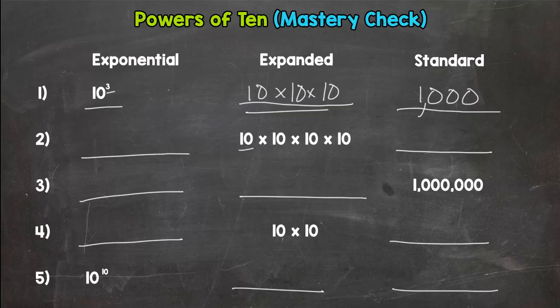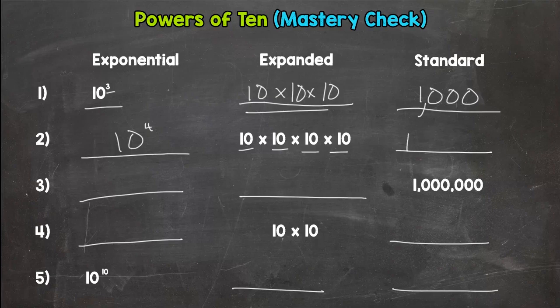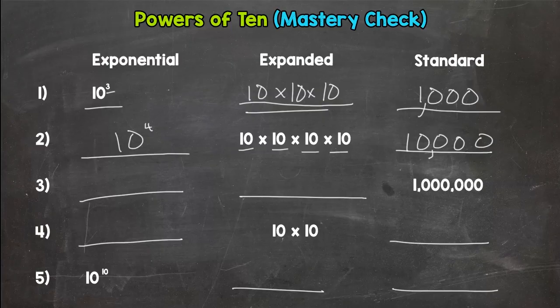So for number two we have one, two, three, four tens, so that would be ten to the fourth power, and then we have a one followed by four zeros. Put your comma in, ten thousand.